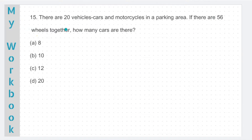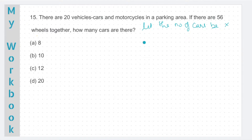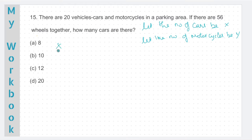Question number 15. There are 20 vehicles — cars and motorcycles — in a parking area. If there are 56 wheels together, how many cars are there? Let us assume the number of cars to be x and the number of motorcycles to be y. We will form two equations with x and y and then solve them. It is given that there are totally 20 vehicles. So x plus y is 20. This will be our first equation.